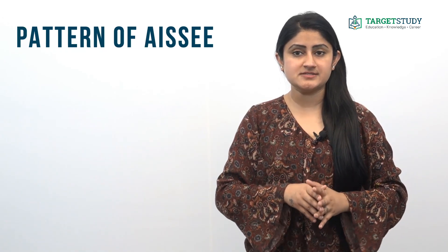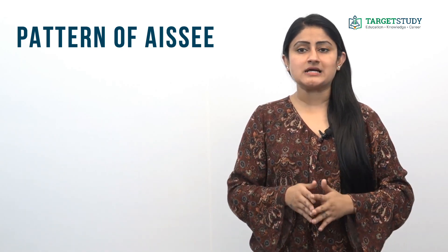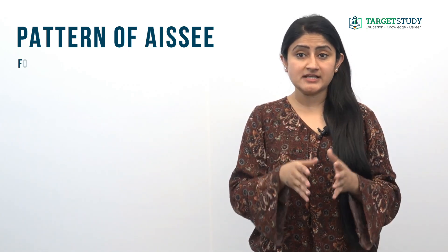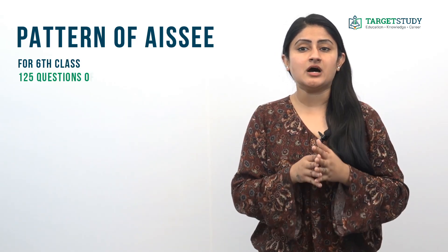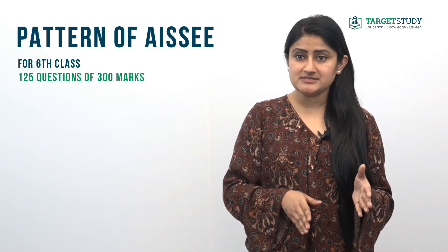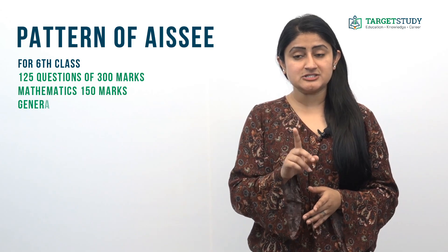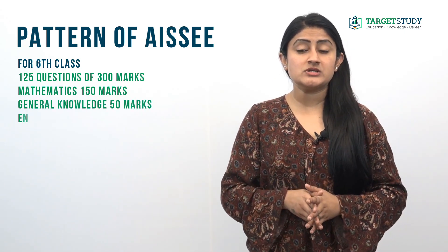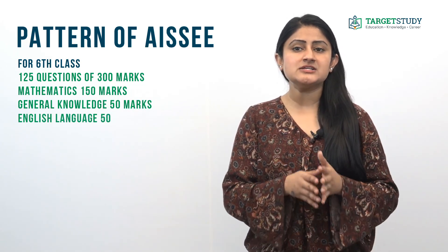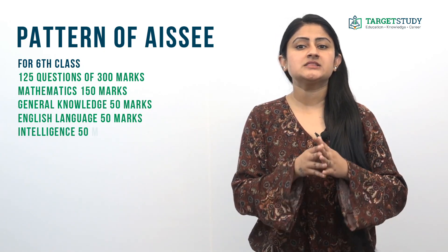What is the pattern of the All India Sainik School Entrance Exam? The pattern for both classes is different. For sixth class, the paper consists of two parts. In the first part, there will be 100 questions from mathematics, general knowledge, and language carrying 250 marks, to be completed in two hours. The second part will consist of 25 questions from intelligence aptitude carrying 50 marks, to be completed in 30 minutes.